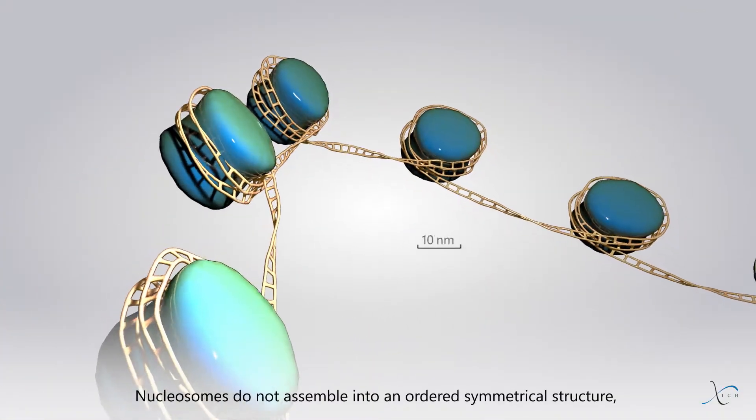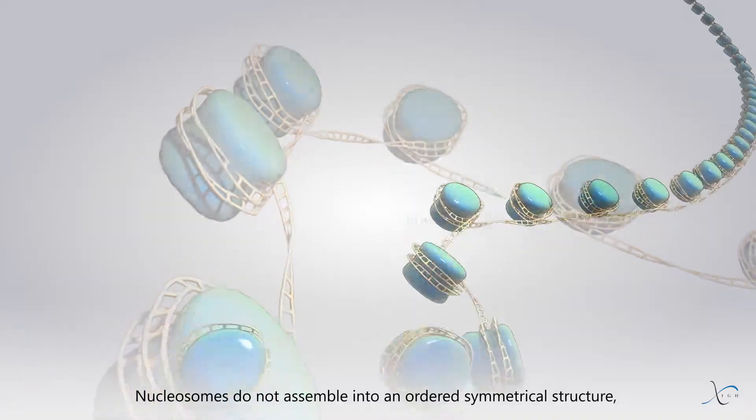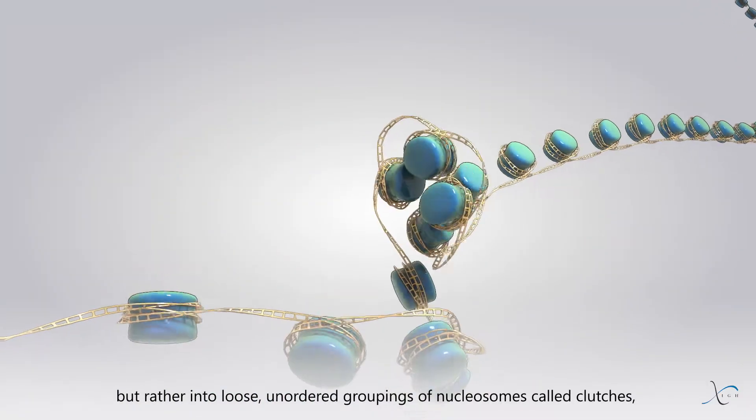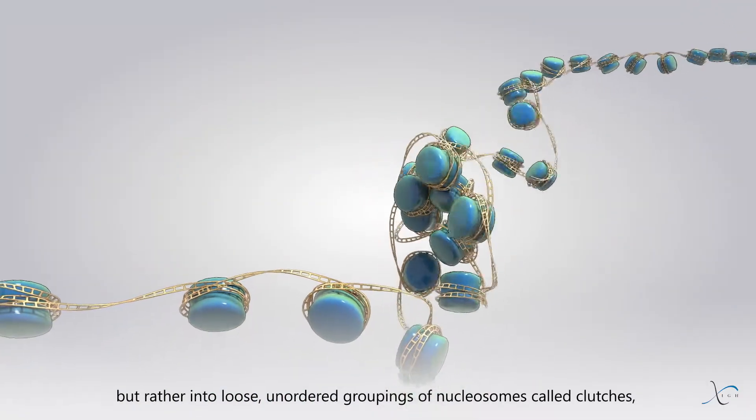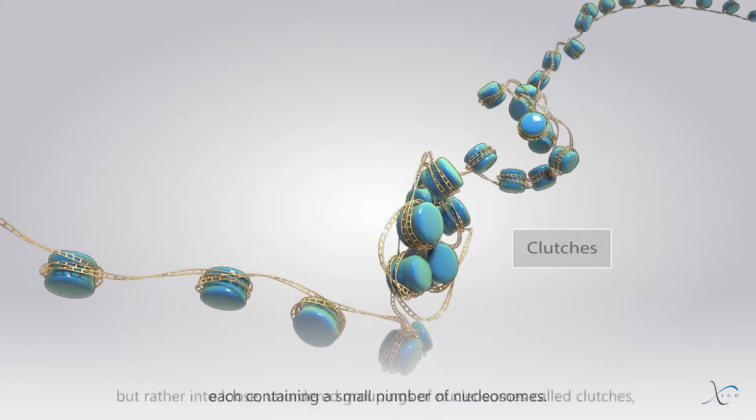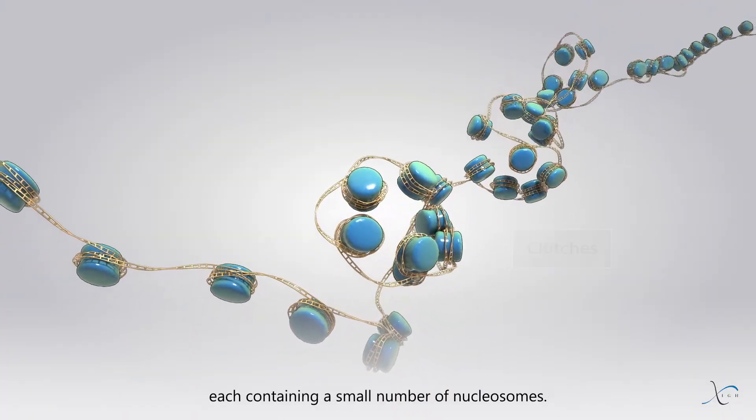Nucleosomes do not assemble into an ordered symmetrical structure, but rather into loose, unordered groupings of nucleosomes called clutches, each containing a small number of nucleosomes.